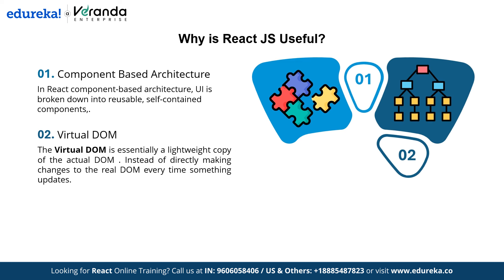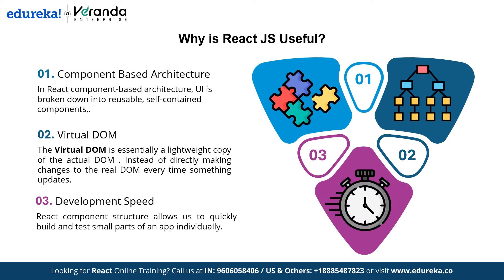The next one is virtual DOM. The virtual DOM is essentially a lightweight copy of the actual DOM. Instead of directly making changes to the real DOM every time something updates, React updates this virtual DOM first. Once React has figured out what has changed, it then updates only the necessary parts of the real DOM. After that, we have development speed. React's component structure allows us to quickly build and test small parts of the app individually. Since each component is separate, we can focus on building and styling one section at a time without breaking other parts of the page.